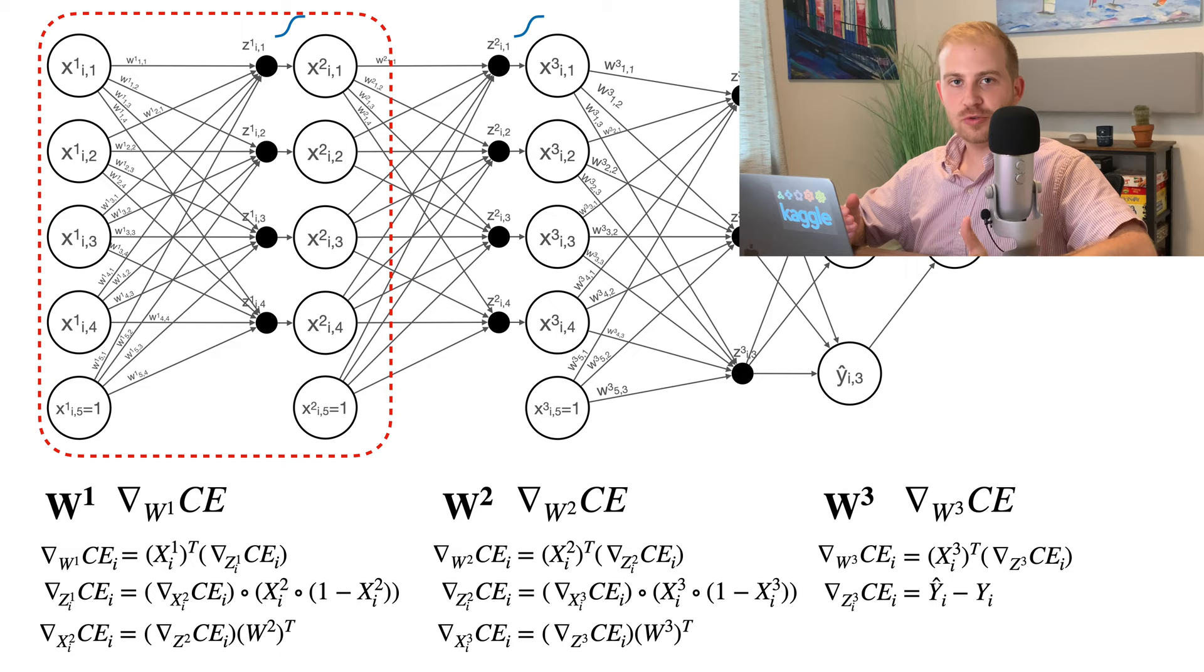The key to implementing this in code is to cache all of these Xs and Zs as you calculate them in the forward pass. So pause the video and see if you can implement a neural network class with support for multiple hidden layers. By the way, when you have a neural network with multiple hidden layers, that's typically what people refer to as deep learning.